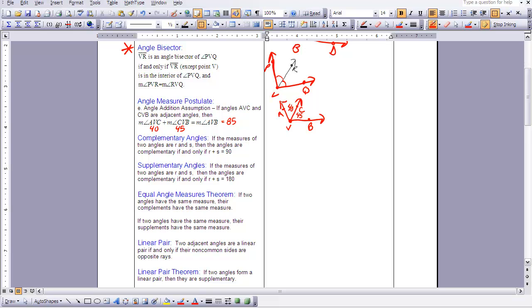The next two are types of angles, or combinations of angles that I know you've studied before. They're complementary and supplementary angles. In complementary angles, if measures of two angles are R and S, then the angles are complementary if and only if R plus S equals 90. So basically, if you have two angles whose sum equals 90, then you have complementary angles. And if you have supplementary angles, instead of adding up to 90, the two angles would add up to 180 degrees. So let's draw a picture of what that would look like also.